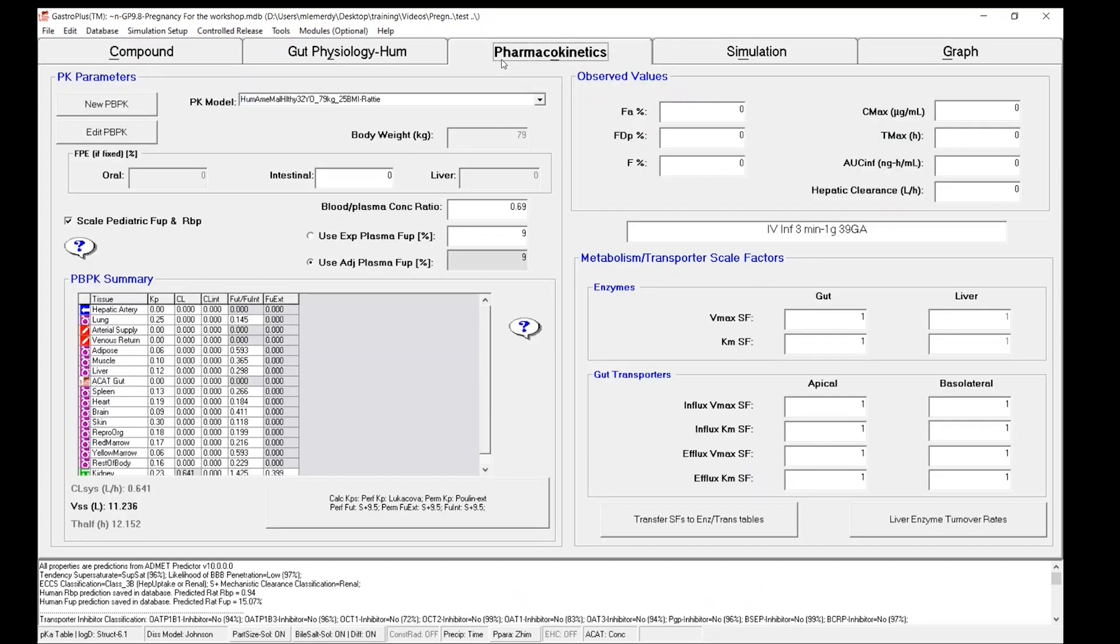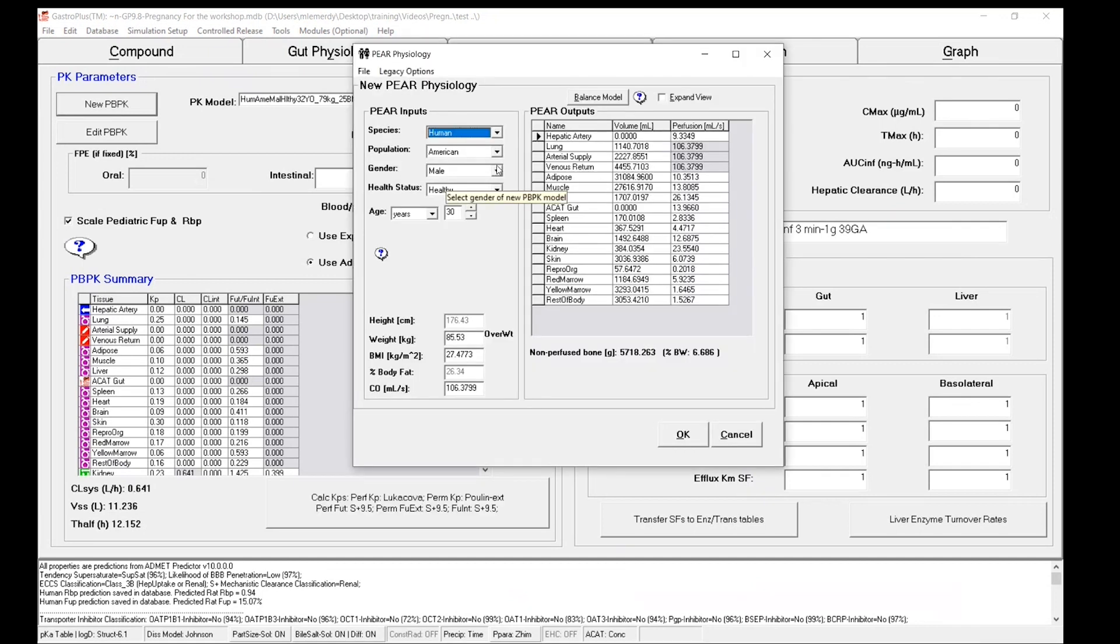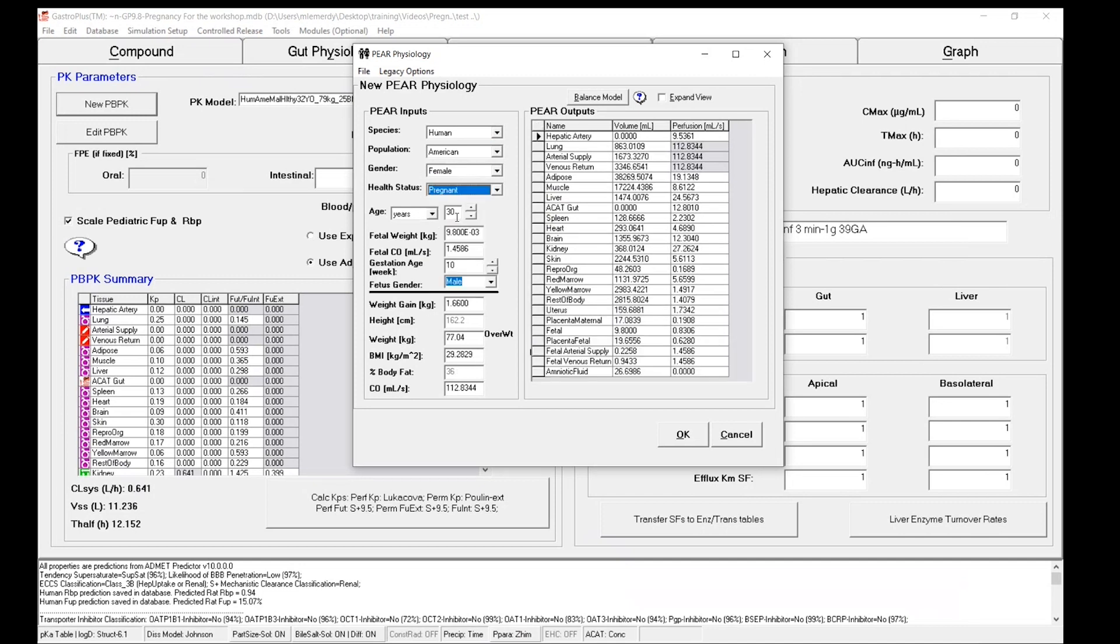Next, I need to create a new PBPK model that is able to describe and accounts for the physiological information of a pregnant woman. So let's click on new PBPK. First, let's change the gender from male to female. And then we can change the health status from healthy to pregnant.